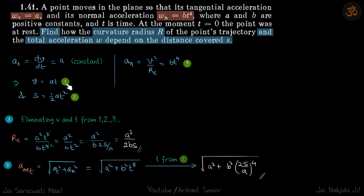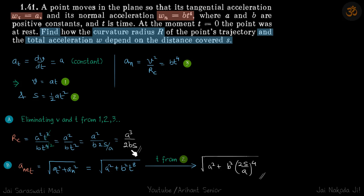From the three equations we need to find radius of curvature, with two more variables — time and velocity. We eliminate both t and v, and we get the radius of curvature as a³/(2bs), which is the part one answer.